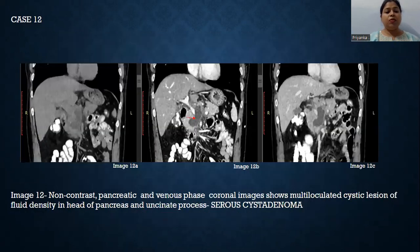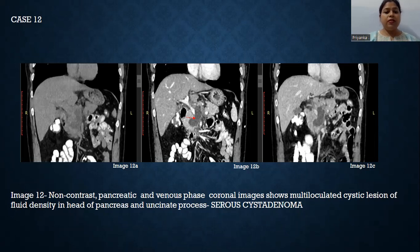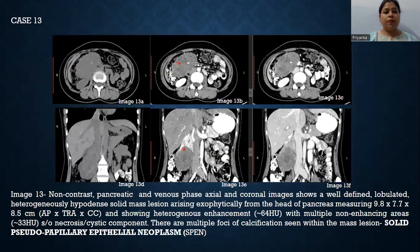Case number 12: Non-contrast, pancreatic, and venous phase coronal images show a multi-loculated cystic lesion of fluid intensity in the region of the head of the pancreas and uncinate process, suggestive of serous cyst adenoma.